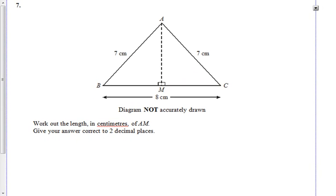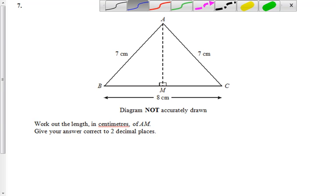Okay, so let's just move this so we can see it better. Let's get the pen. Now, we've got a triangle here, it's actually an isosceles triangle.